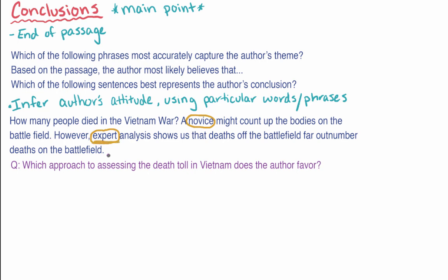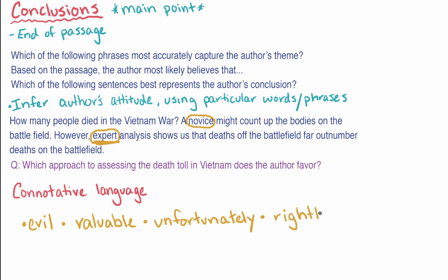Sometimes the words themselves come loaded with meaning. We call that connotative language. The author can reveal their perspective or attitude toward information by using loaded adjectives or adverbs, like evil, valuable, unfortunately, or rightly. Some questions may require that you use the absence or presence of such words to infer whether the author seems to be neutrally and objectively conveying factual information versus stating their opinion or revealing a bias about the issue.